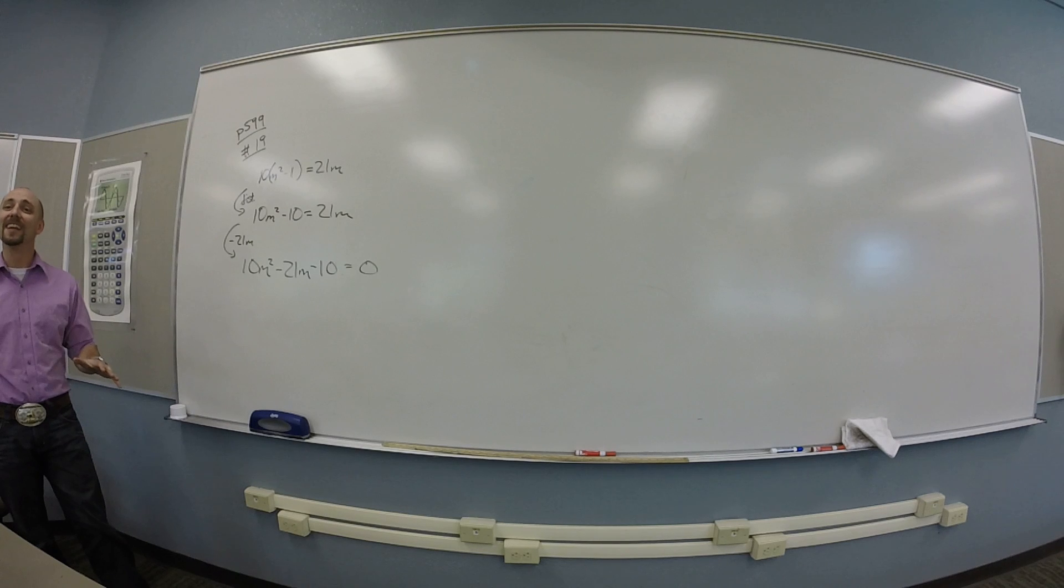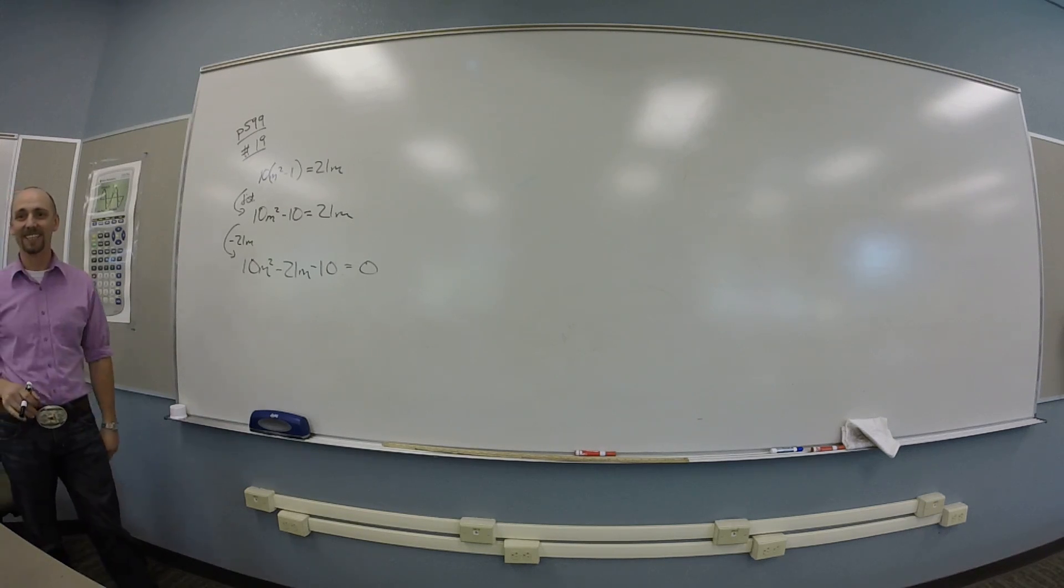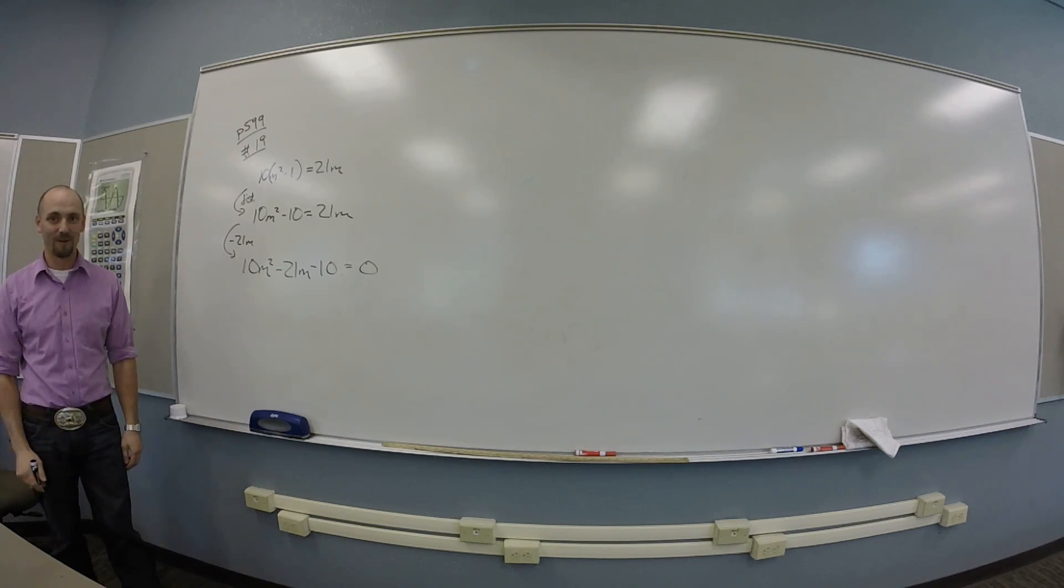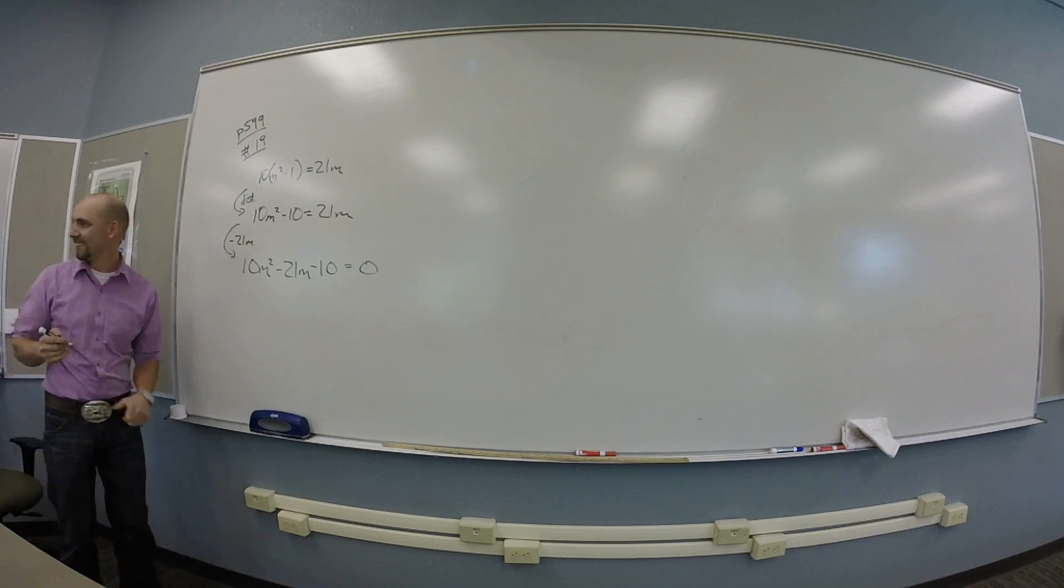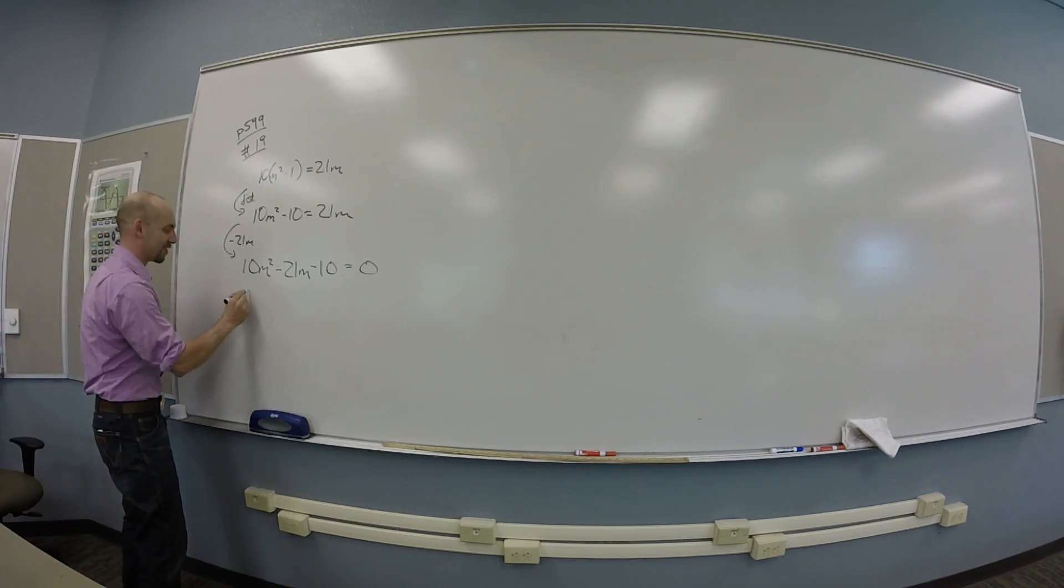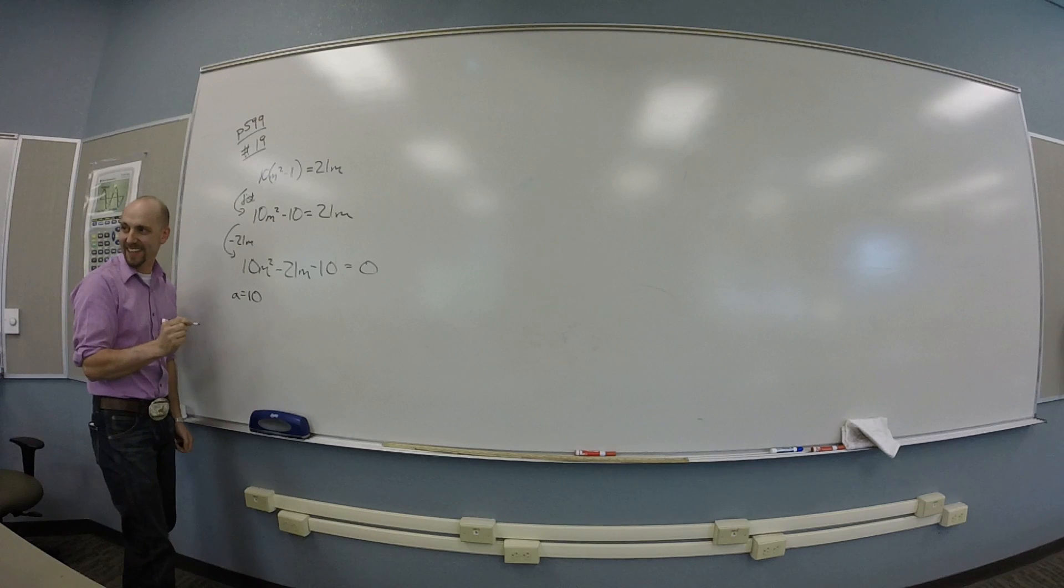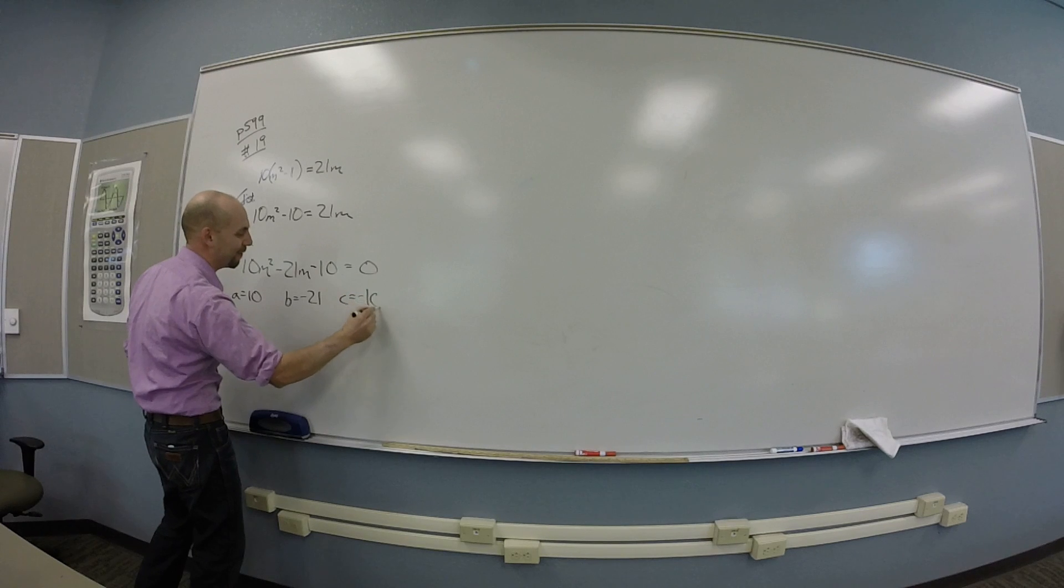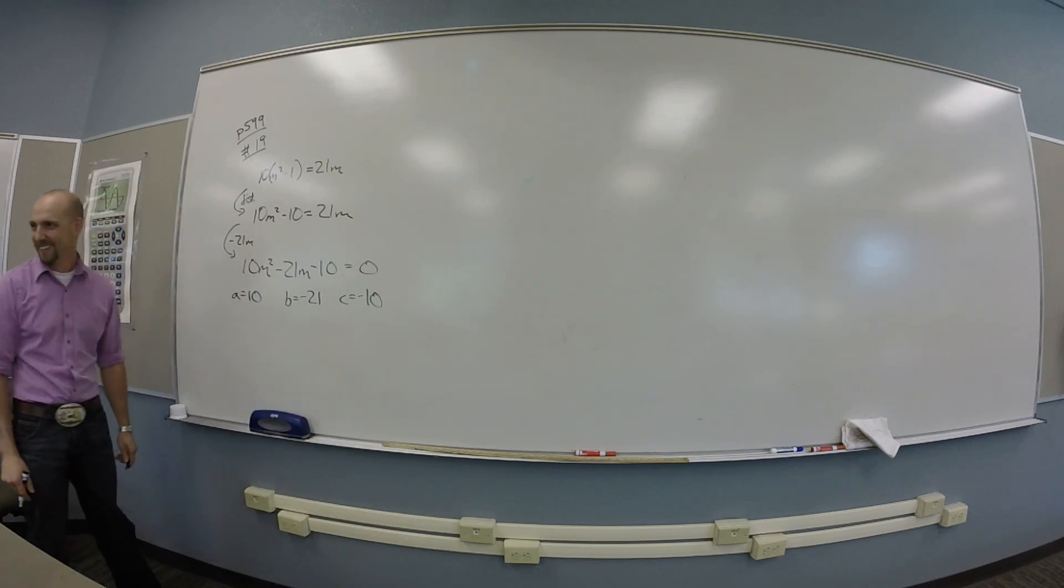So in standard form we have 10m squared minus 21m minus 10. I'm sorry, I didn't mean to get that quite so embedded in your heads. As long as you can identify a, b, and c, I'm not so worried about the standardized form. So what are a, b, and c? A is 10. Michael's so upset about this that he's leaving. B is negative 21. Like I can't live in a room with nonstandard forms.